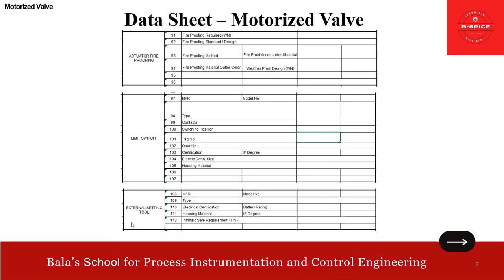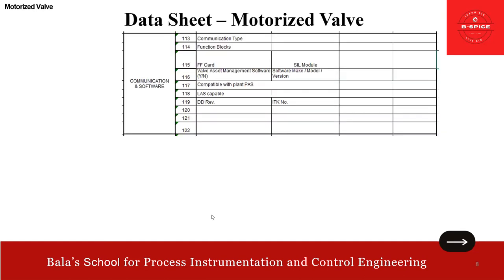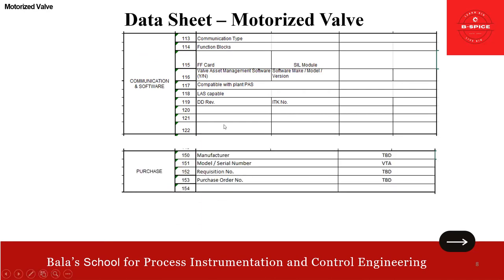Another unique item for this motorized valve is the external setting tool. This is used for accessing the actuator for calibration or interfacing. Specify: manufacturer model number, type, electrical certification, battery rating, housing material, IP rating, intrinsic safe requirement. Then the final part, communication software — communication type, function block, FF card, SIL module, and valve asset management software requirement, make, model, version, compatibility with the plant automation system, last link active scheduler capability, DD revision, and ITK number.